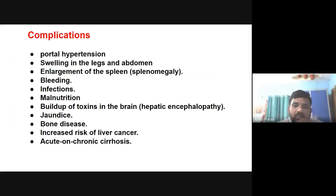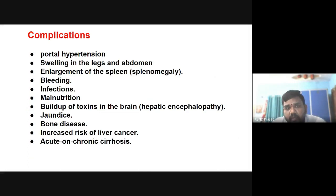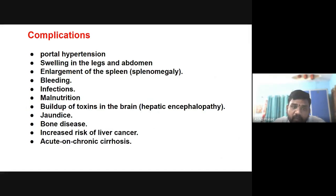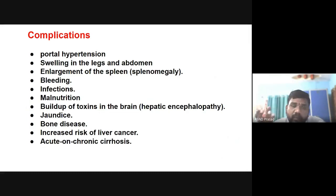What are the complications of liver cirrhosis? Portal hypertension — increased blood pressure in the portal vein system — is a major complication. Other complications include swelling in the legs and abdomen, enlarged spleen, internal bleeding, infections, malnutrition, impaired detoxification leading to toxins building up in the brain, jaundice, bone disease, increased risk of liver cancer, and hepatorenal syndrome where the kidneys are also affected.